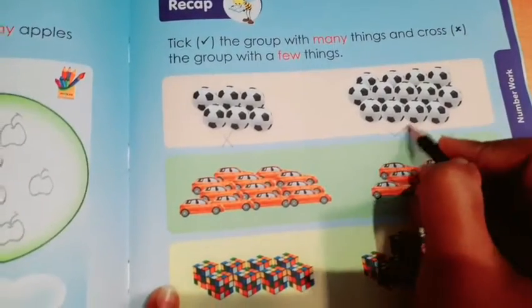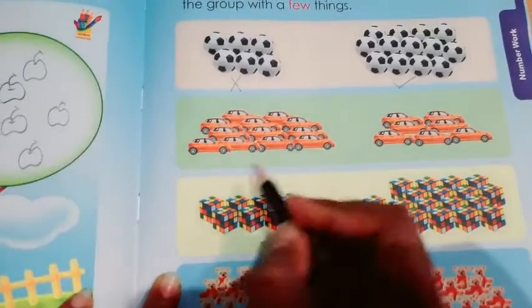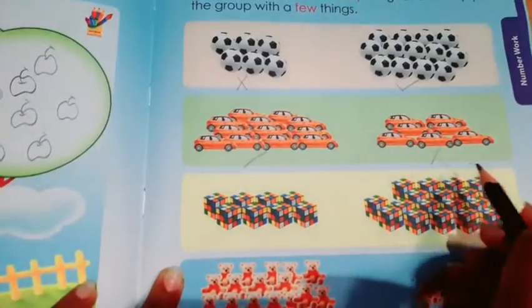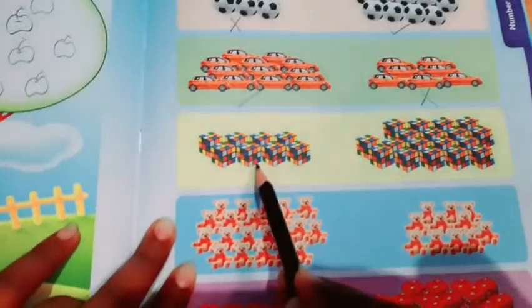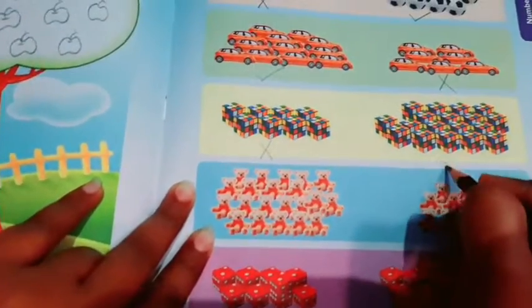These are many balls, so we will tick it. Are these many or are these many? These are many, so we will put tick, and for these we will put cross. Now these dice are few dice, so we will cross it. Many dice, we will tick it.